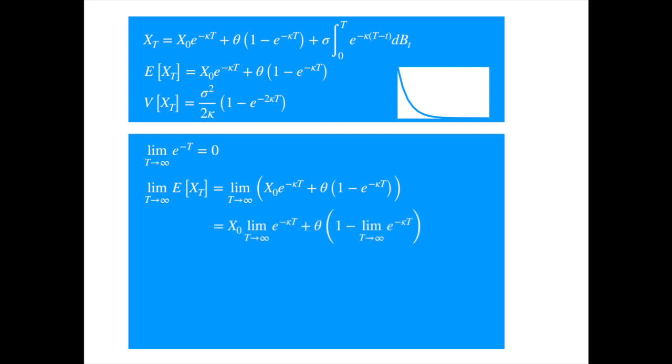Variance is slightly subtle, but let's find out. Before we start applying the limit, recall that the exponential of the negative of a positive variable tends to zero as the variable tends to plus infinity. Let's calculate the limit of the mean first. Interchanging limit and sum, both the exponential terms go to zero as t tends to infinity, and we are left with theta, the long term mean. No surprise there.